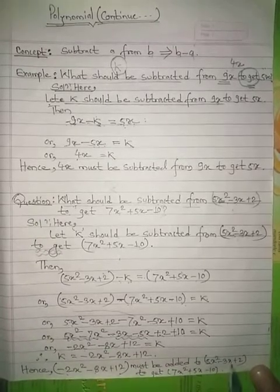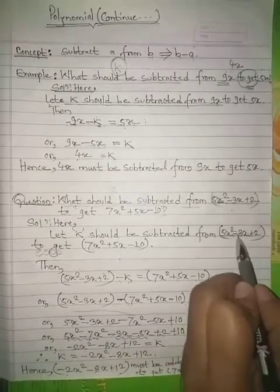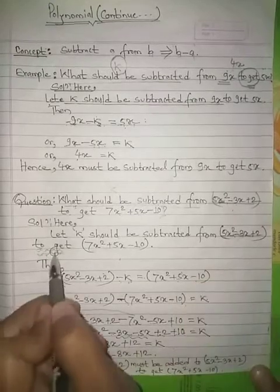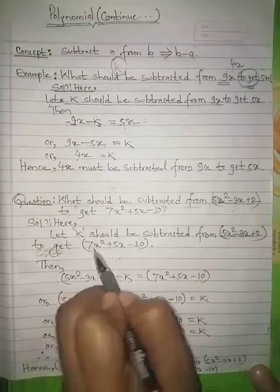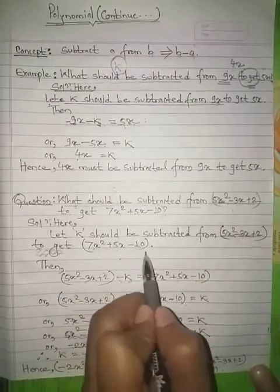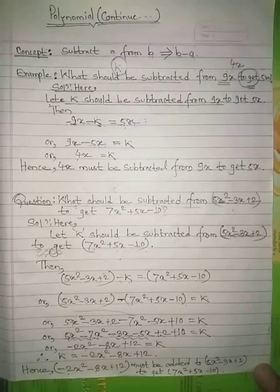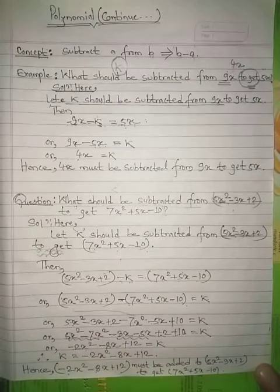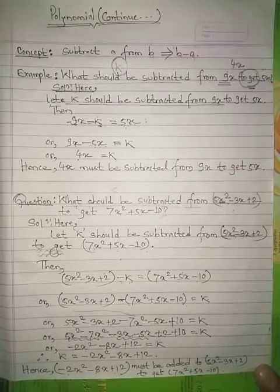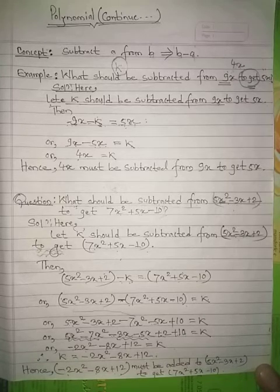Hence the value of K is minus 2x² minus 8x plus 12, which must be subtracted from 5x² minus 3x plus 2 to get 7x² plus 5x minus 10. This completes the solution. Hope you understood — thank you, see you in the next video.